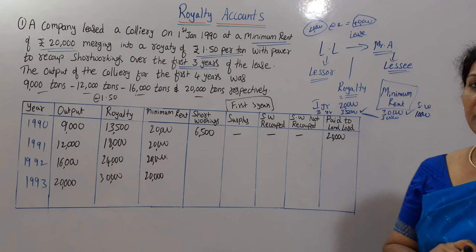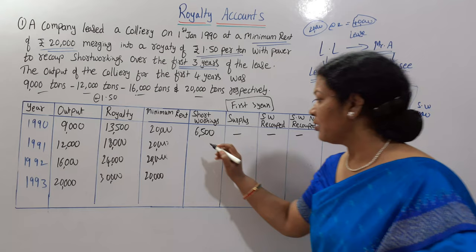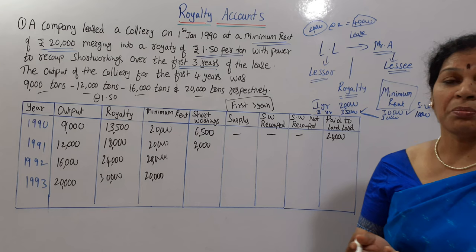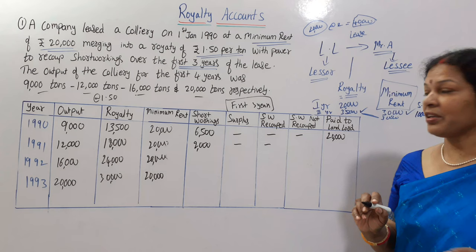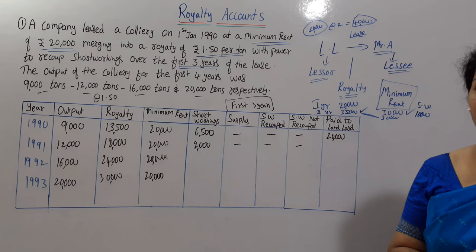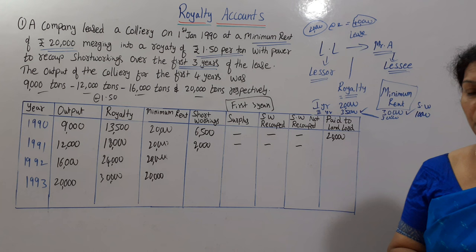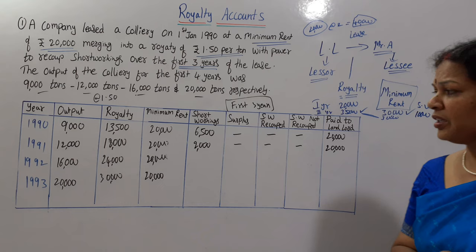Second year (1991): minimum rent is 20,000, royalty is 18,000. Short workings = 20,000 minus 18,000 = 2,000. Once again no surplus, so short workings recouped is nil. Short workings lapsed is also nil because we are still within the first three years — we still have time to recoup. Pay to landlord: whichever is more — 18,000 or 20,000 — 20,000 is more, so 20,000 is paid.